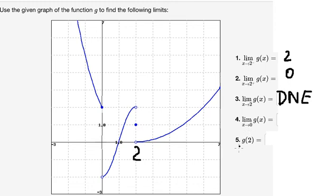As x approaches 0, we can see that from the left we go to 2, and from the right we go to negative 2. So the left and right limits are not the same, so this is DNE.